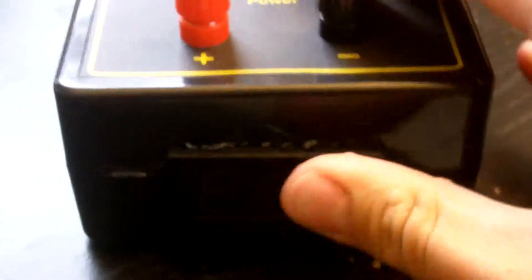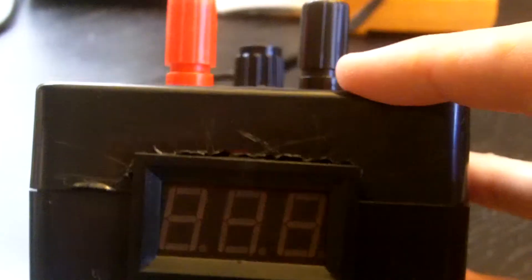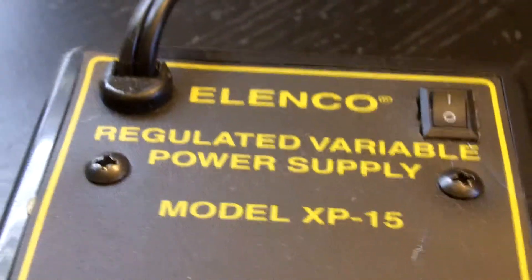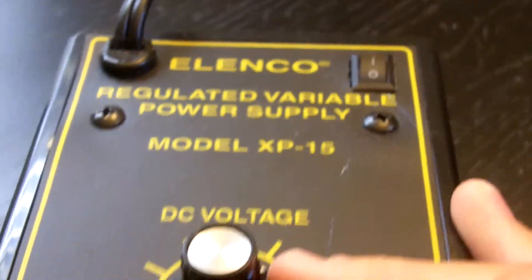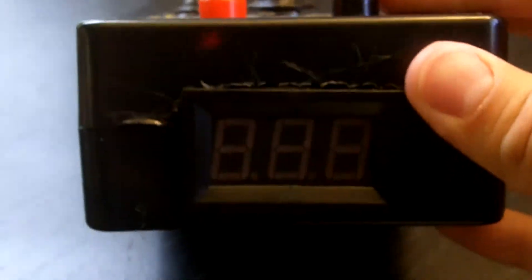But today we're not going to really be taking that much of a look at the rocker switch. Today we're going to be taking a look at the digital voltage panel meter that I installed in the bottom of the power supply. In this video I'll show you how it works, I'll take the power supply apart and show you how I wired it into the power supply, and then we'll run a couple tests with it. So stay tuned.